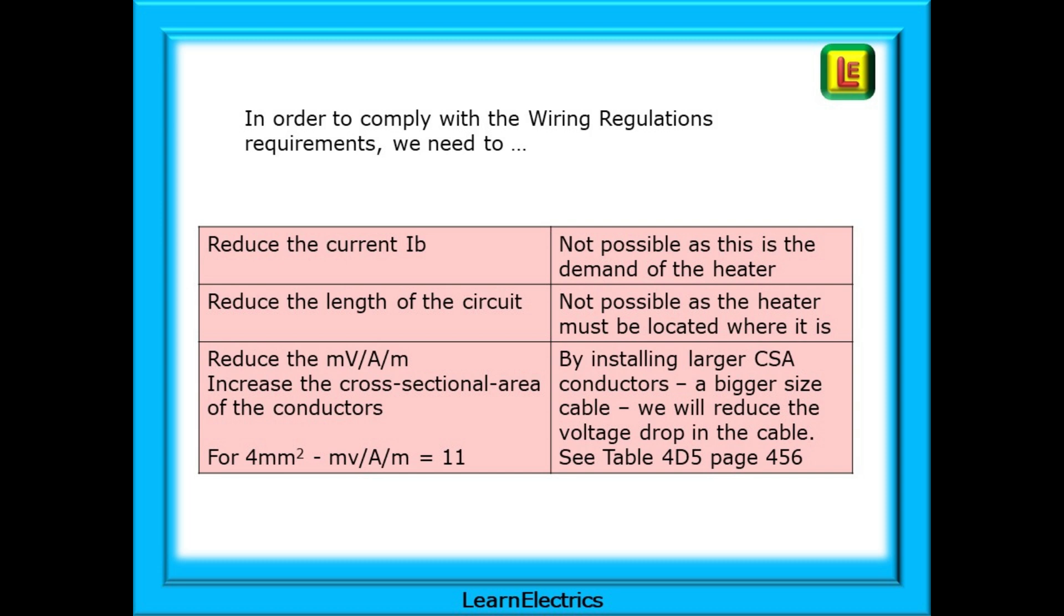We can say that this is unacceptable and we should reconsider our design options. In order to comply with the wiring regulations requirements we need to either reduce the current IB, but this is not possible as this is the current demand of the heater. Turn it on and it draws 20 amps of current. Can we reduce the length of the circuit? Not possible as the heater must be located where it is.